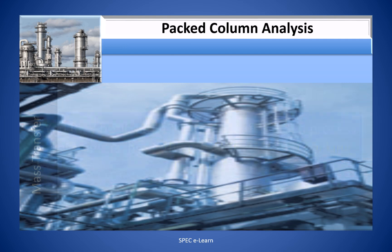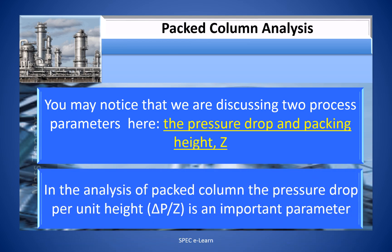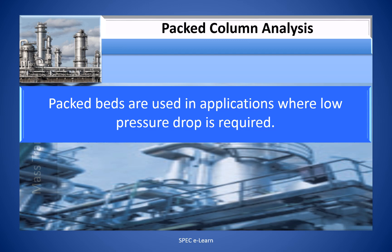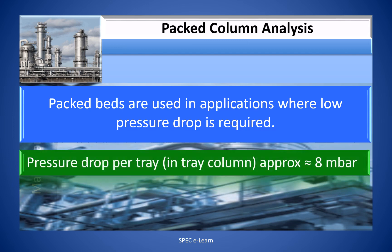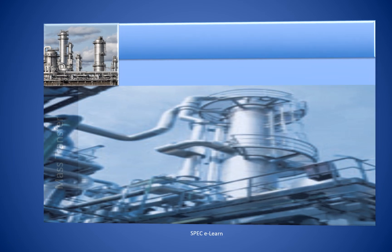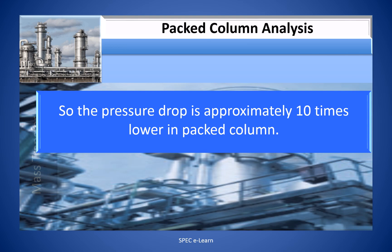You may notice that we are discussing two process parameters here: the pressure drop and packing height. In the analysis of packed columns, the pressure drop per unit height, delta P by Z, is an important parameter. Packed beds are used in applications where low pressure drop is required. Pressure drop per tray in a tray column is 8 millibar, whereas pressure drop per equivalent height of packing is 1 to 1.5 millibar. So the pressure drop is approximately 10 times lower in a packed column.